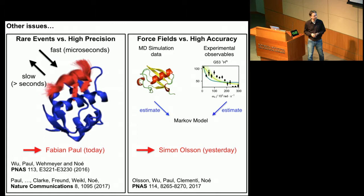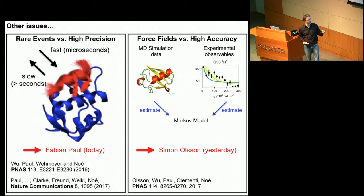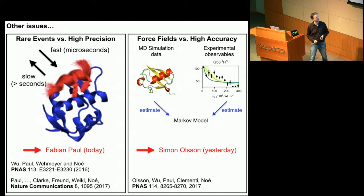Every force field has a limited range of applicability. One thing we can do, instead of blindly predicting with an MD simulation and Markov model and hoping it's consistent with experiment, is to include experimental data in the process of estimating the model — adding this information to your estimation procedure. This is the augmented Markov model approach — a way to add experimental data into these simulations, which Simon talked about yesterday.